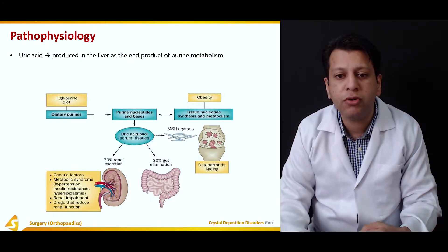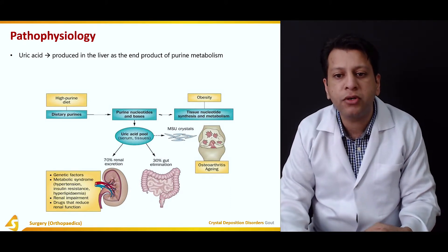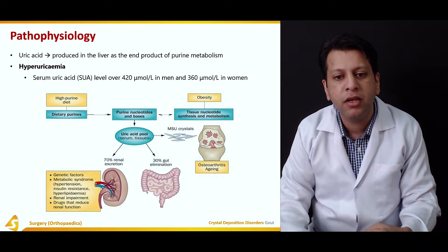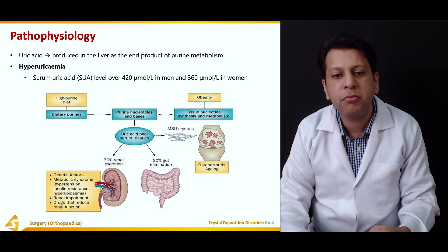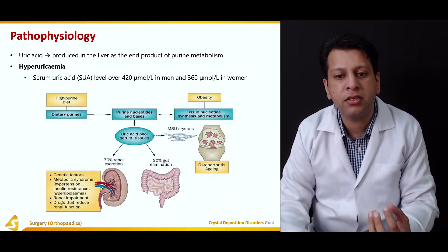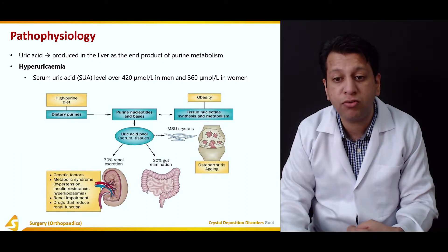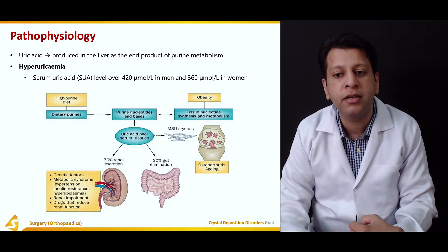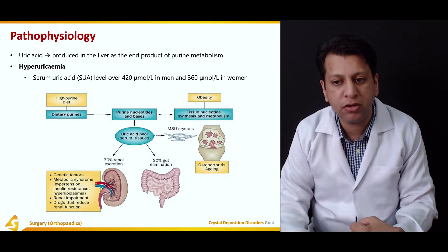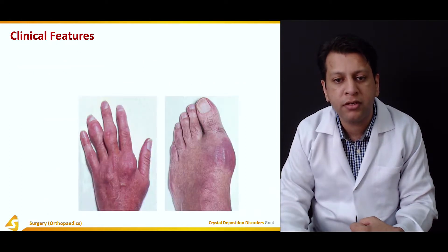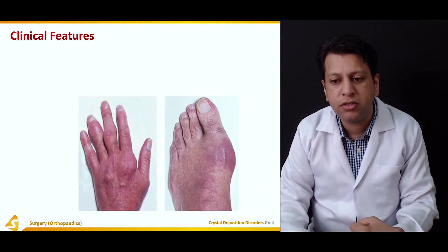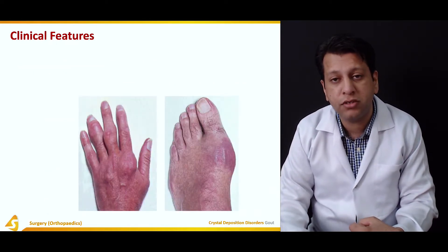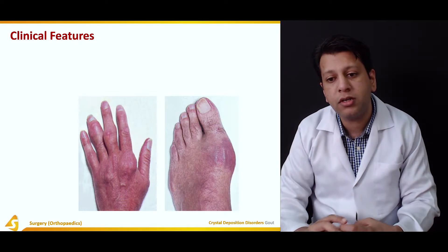Uric acid is produced in the liver as an end product of purine metabolism. Hyperuricemia is defined as higher levels — in males it is 420 micromoles per liter and in females 360 micromoles per liter. Now coming to the clinical features.